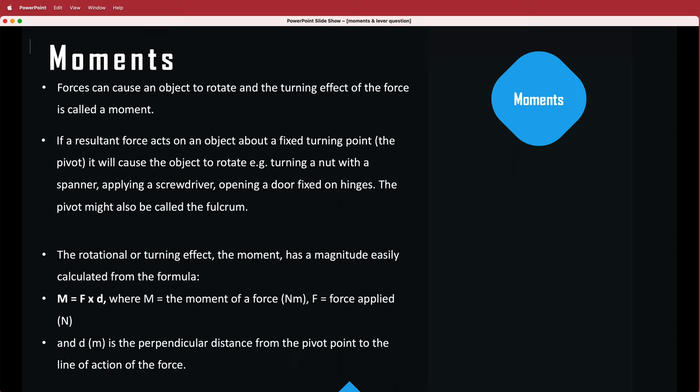So the rotational turning effect, the moment, is easily calculated from the formula M is equal to F times d, where M is the moment of the force, F is the force applied, and d is the perpendicular distance from the pivot point to the line of action of the force.